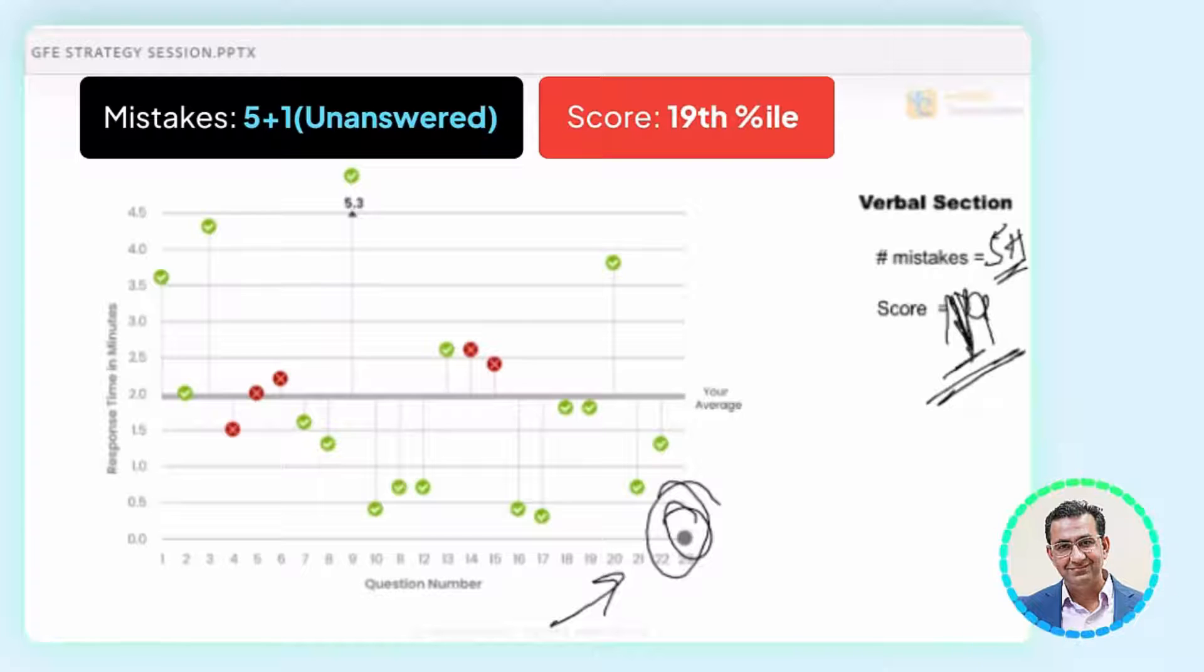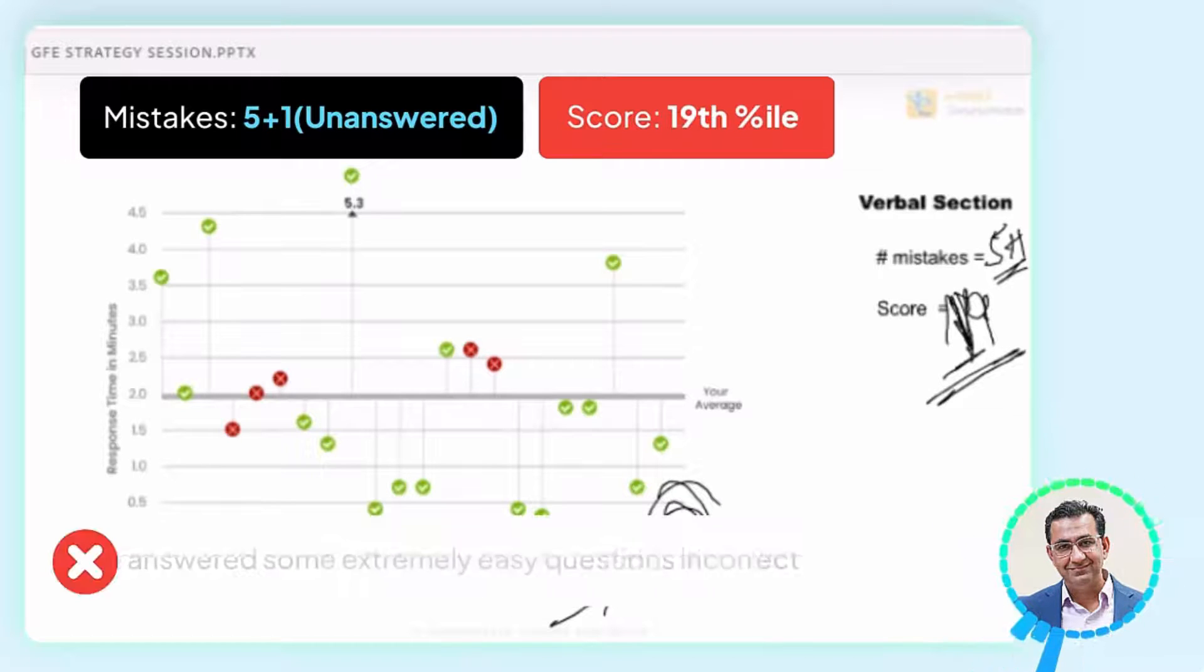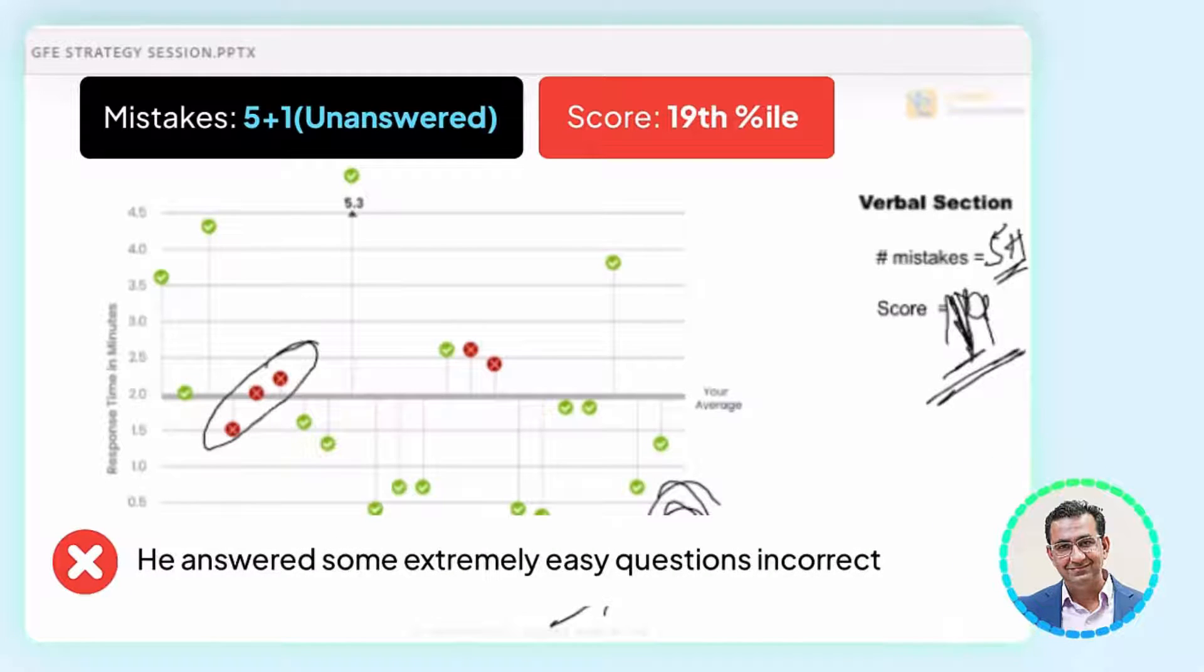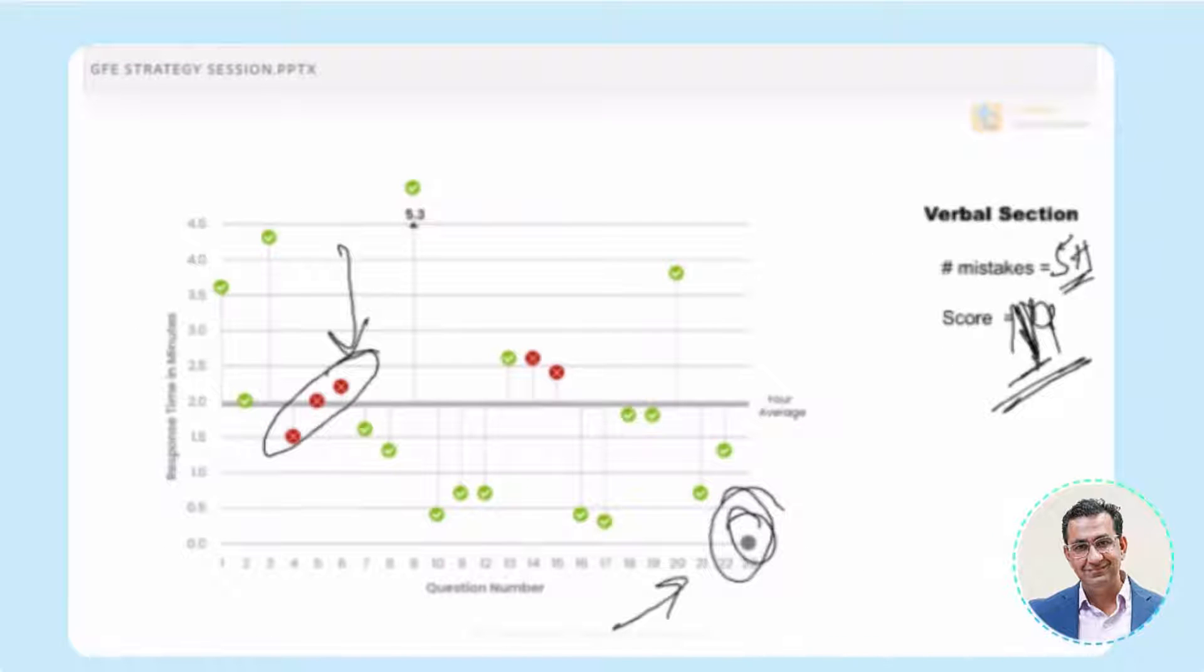What does this tell you? How? I can help you answer how, but why don't you take a guess? Yes. 19th percentile. He had a V75. He shouldn't leave any questions. Yes. But that wasn't the case. He answered some extremely easy questions incorrect over here. Some extremely easy questions. So the test did not even serve him very challenging questions. So the test won't even serve difficult questions to you.